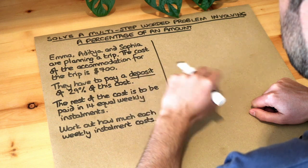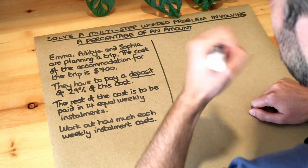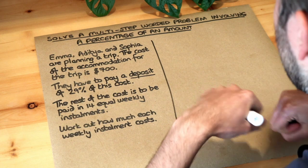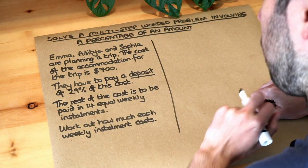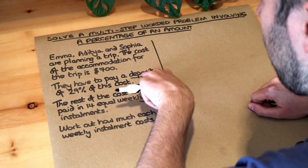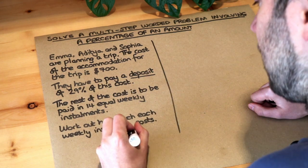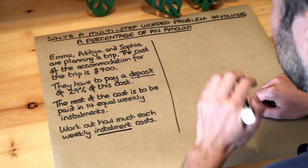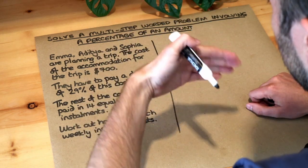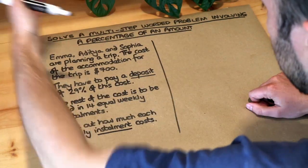In case you're not familiar with the word deposit, that's when we're allowed to pay some of the cost of something now — we call that the deposit — and then we pay the rest later. What it's saying is that what we have to pay later, after we've paid the deposit, is broken into installments. Installments is when you break a cost that you have to pay into equal amounts.